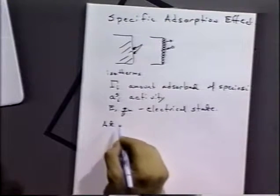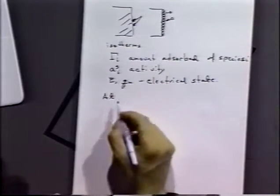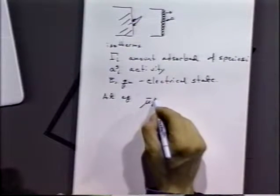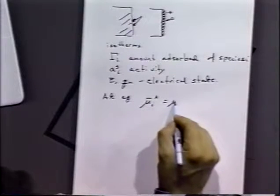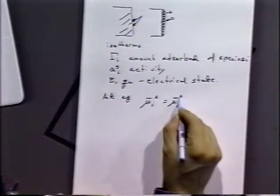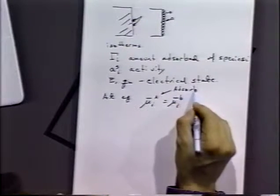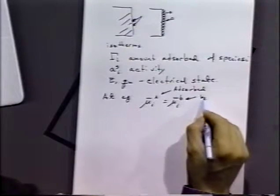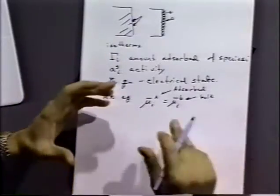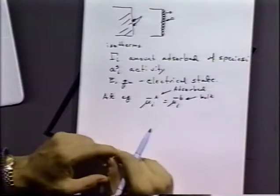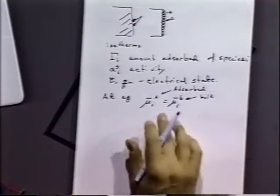At equilibrium, the electrochemical potential of species i that's adsorbed has to be equal to the electrochemical potential of species i that's in the bulk solution. If they weren't equal, we would not be at equilibrium because there would be some potential for that reaction to occur in one way or the other — either material would be going to the bulk or they'd be going to become adsorbed. So at equilibrium, we assume that the adsorbed and the bulk species have equal electrochemical potentials.